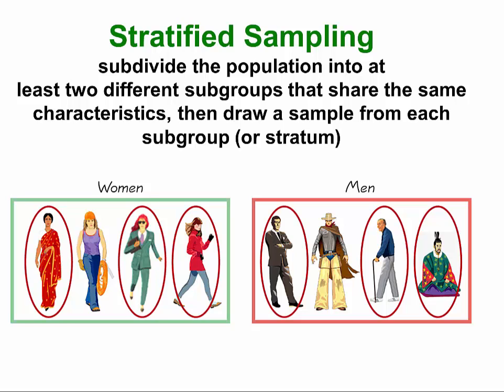Stratified sampling is sampling that involves the population being divided into strata, somewhat like stratified rock found in the Grand Canyon. The population is divided into these groups, these strata, and then a little bit is drawn from each one of those groups or strata.